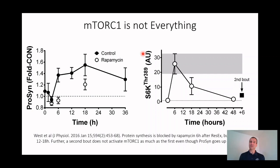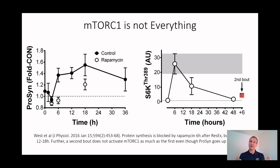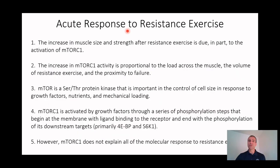Another example that mTOR complex 1 isn't everything: the response to a first bout of exercise shows a large increase in S6 kinase activity — about 25-fold. But when a second bout of exercise is performed 48 hours later, S6 kinase activity only increases about 4 to 5-fold. Even though everything is the same — the load, the volume — we don't see the same S6 kinase phosphorylation, so mTOR activity is blunted in the second bout.